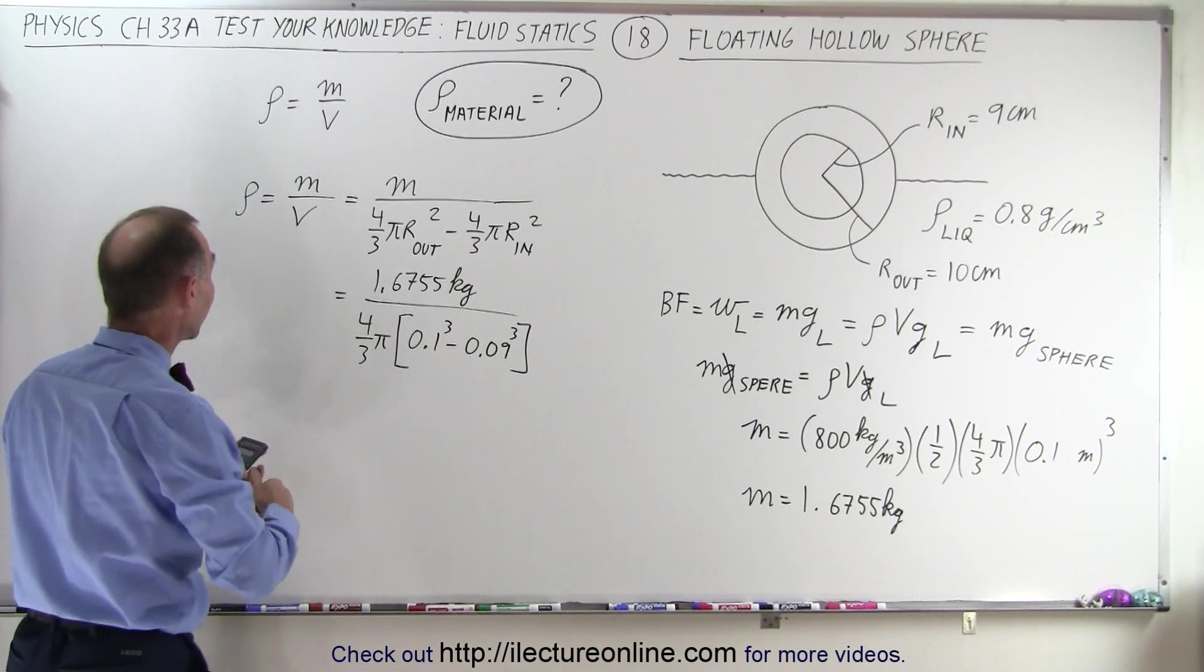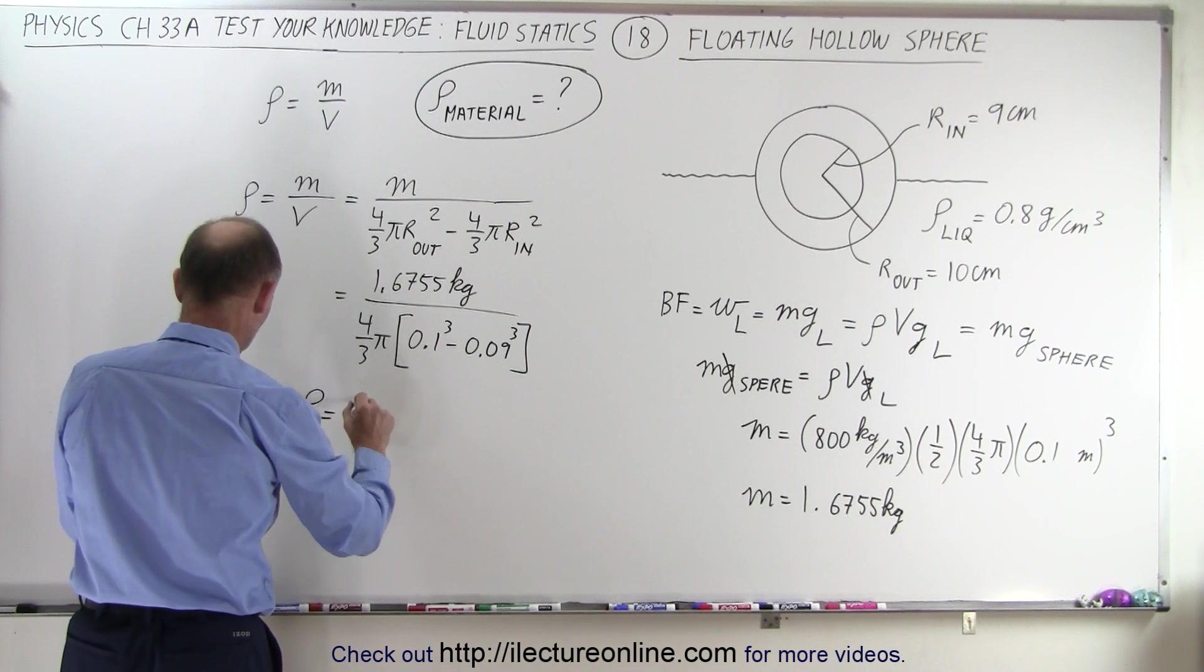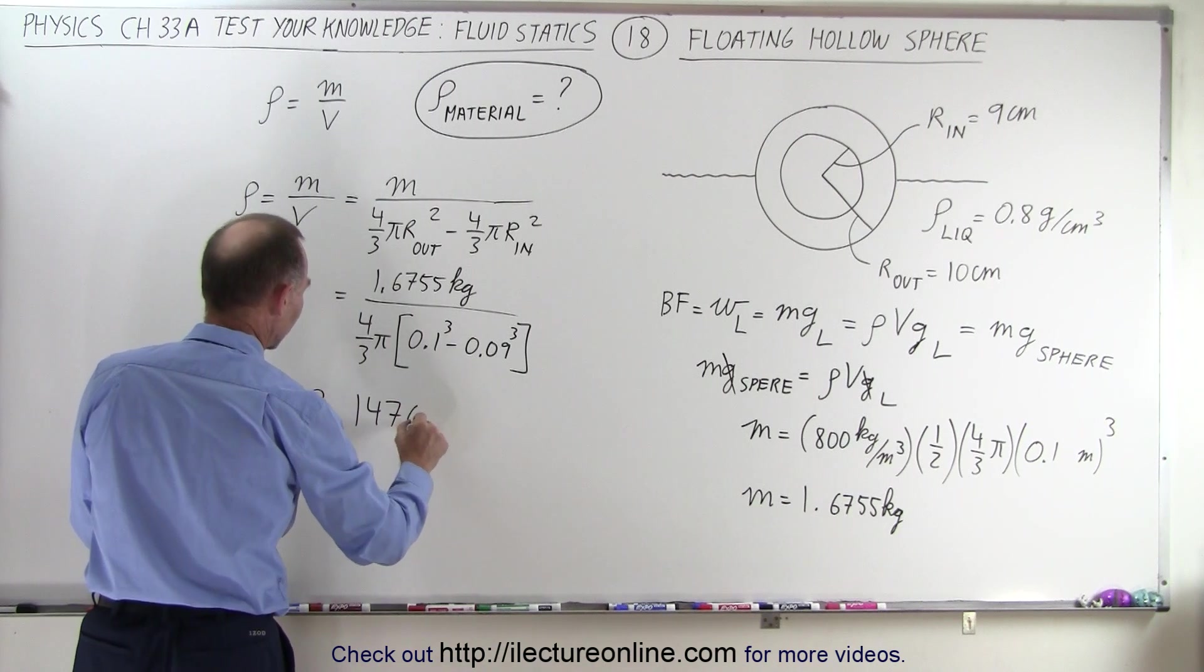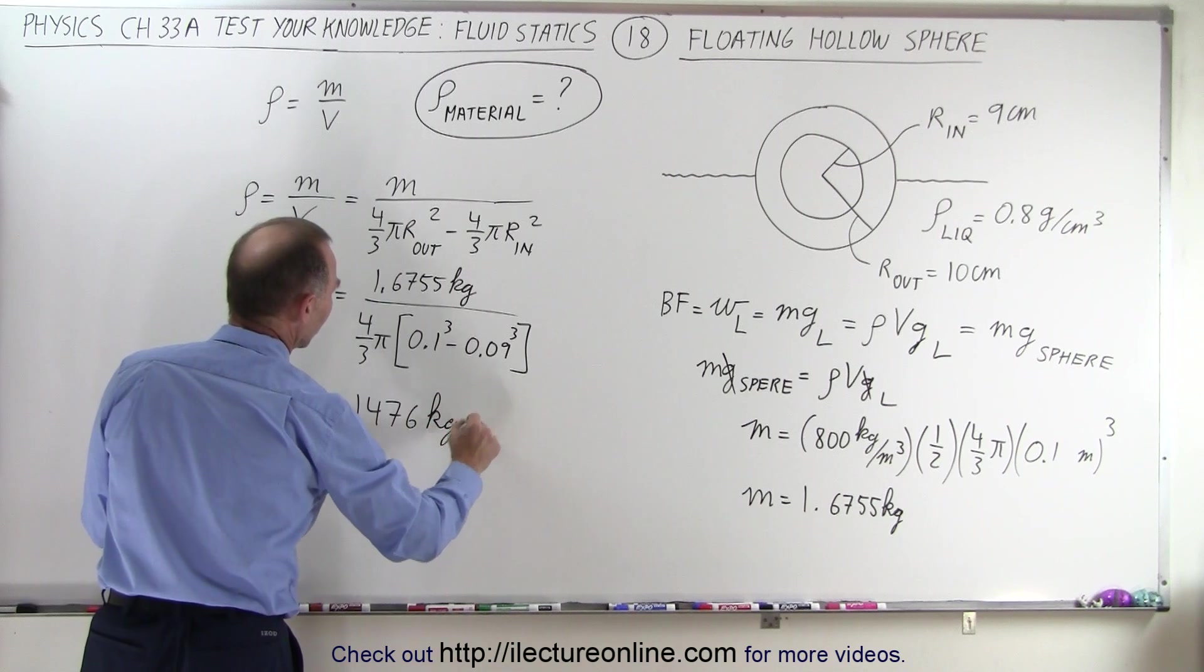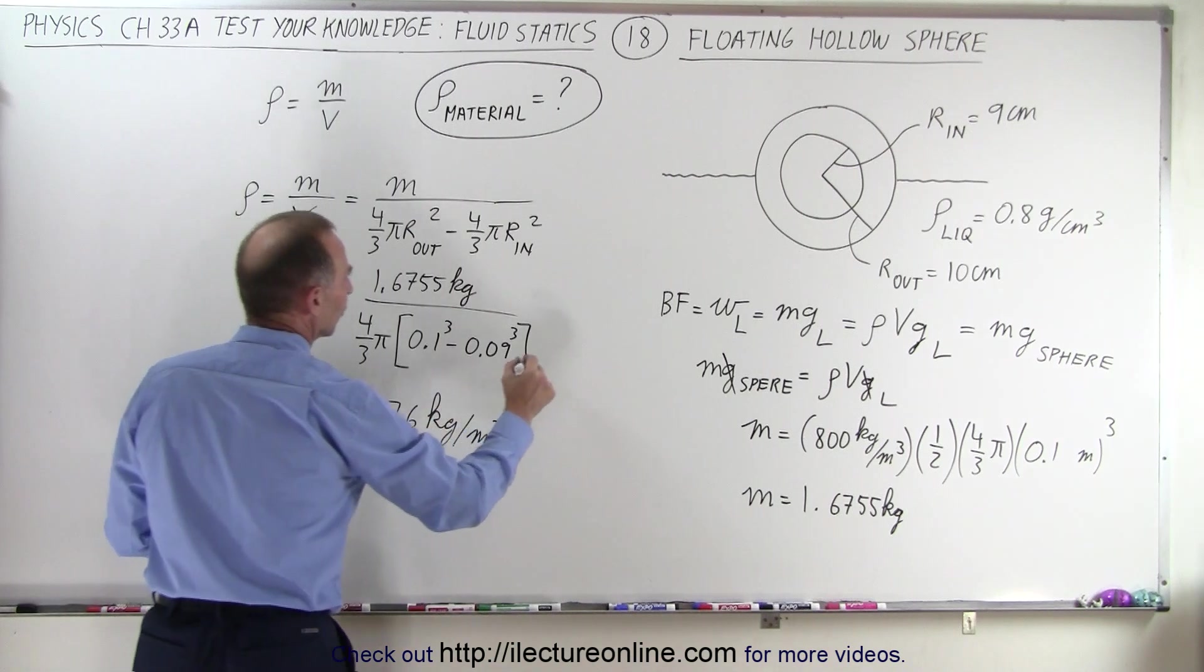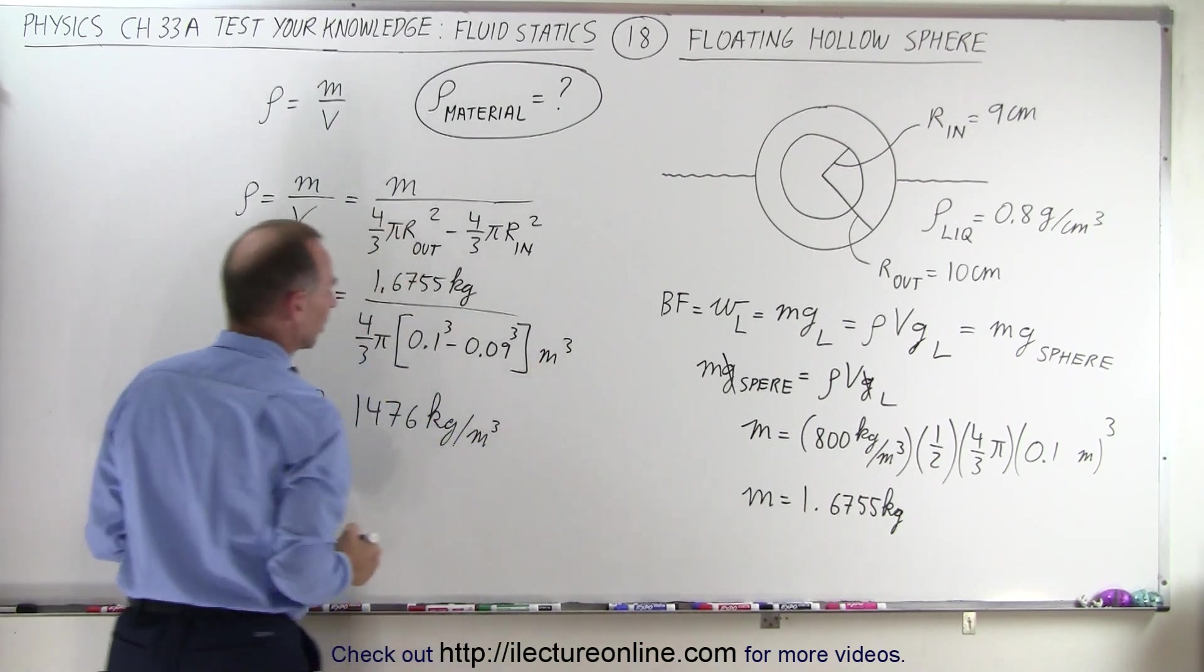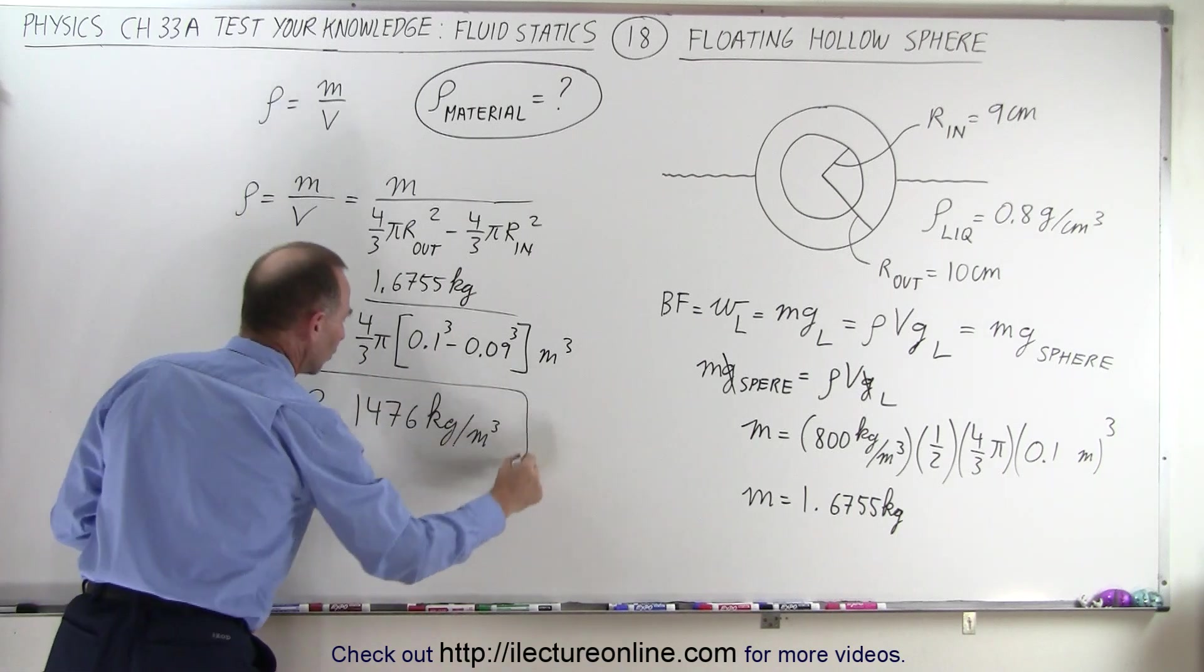And it looks like we have the density equal to 1,476 kilograms per cubic meter. Of course, this would be meters cubed, and that's where we get the units from.